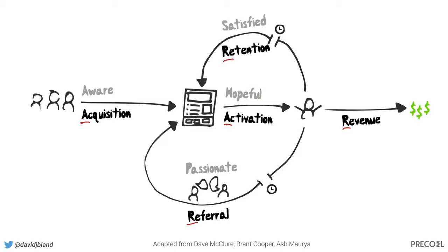Most of your products and services today need to be represented as a system because they are really complex — it's not that you just pour more things at the top and more money comes out the bottom. What I also like about this version is the qualitative layer from Brent Cooper: aware, hopeful, satisfied, passionate. How are your customers becoming aware of your product? Are they becoming hopeful — that aha moment where the value prop resonates? Are they coming back because they're satisfied? And are they becoming passionate and evangelizing your product to other people, which saves you on acquisition?